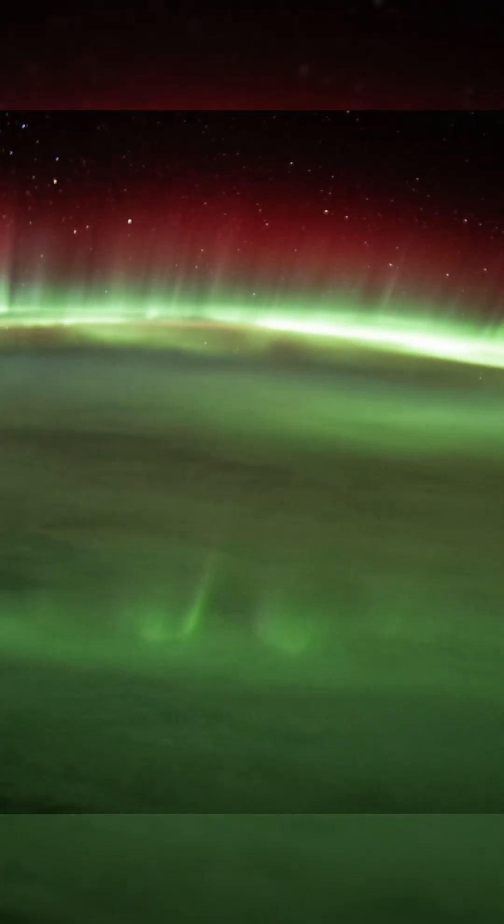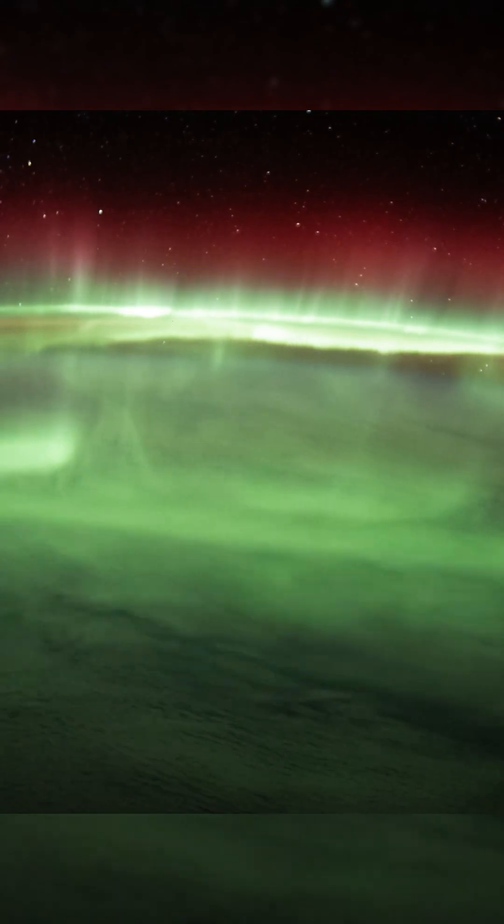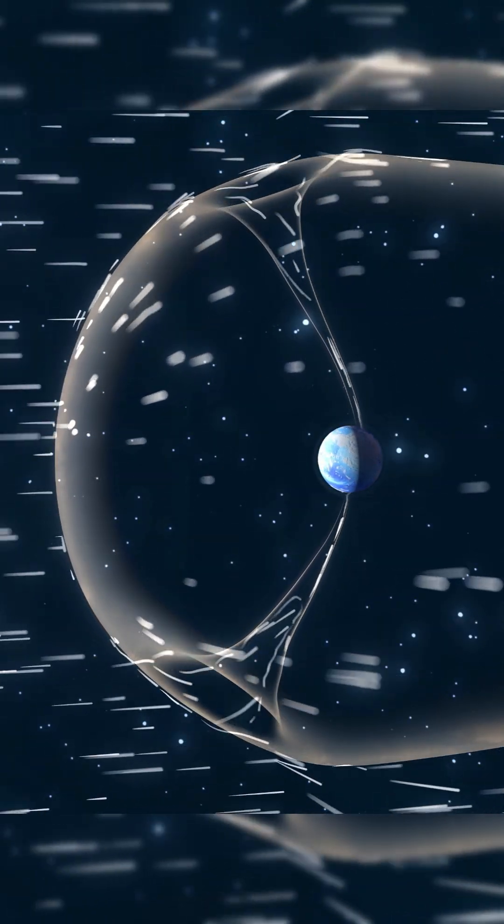But high above each of Earth's poles, there's one vulnerable spot in this shield, where solar wind is funneled straight down toward Earth and our technology.